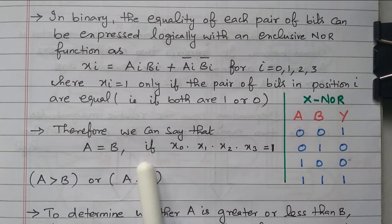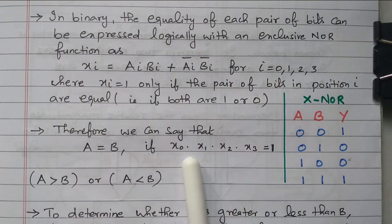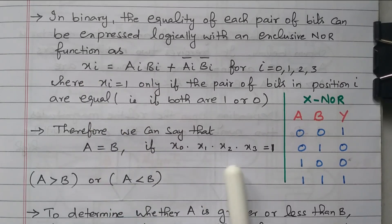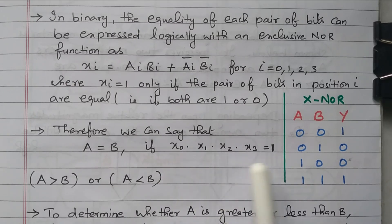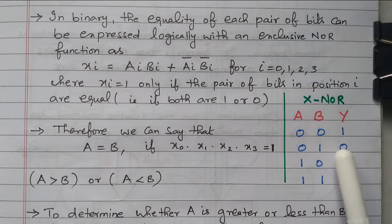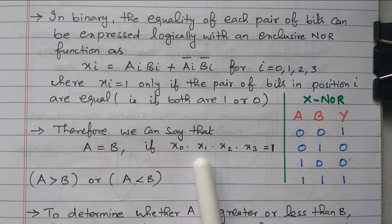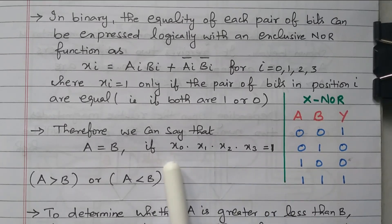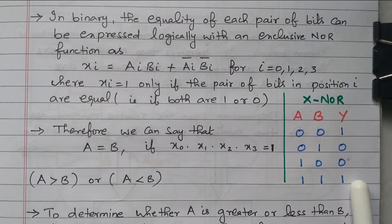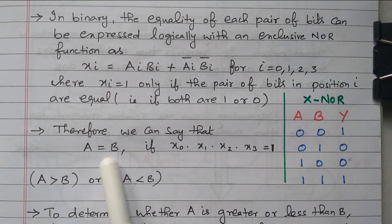Therefore, we can say A equals B if X0, X1, X2, and X3 all equal 1. X0 checks bits A0 and B0; X1 checks A1 and B1; X2 checks A2 and B2; X3 checks A3 and B3. If all four are 1, then A equals B. The main property of the XNOR gate is: when both inputs are equal, the output is 1. This is used to check whether each and every digit is equal.